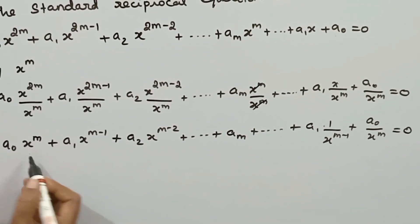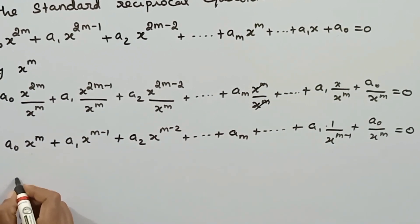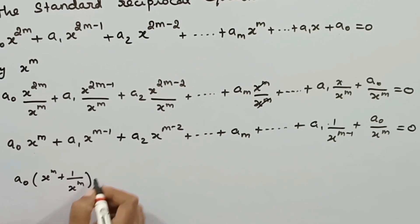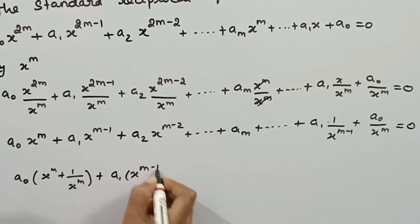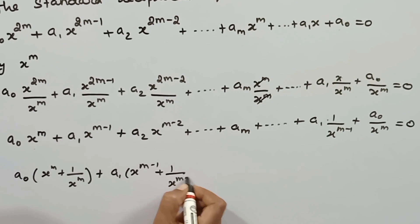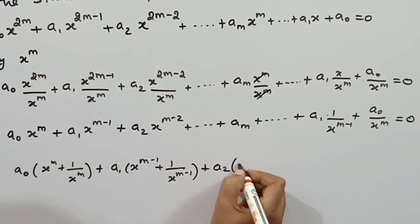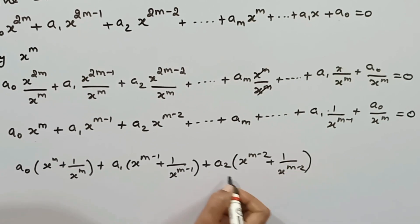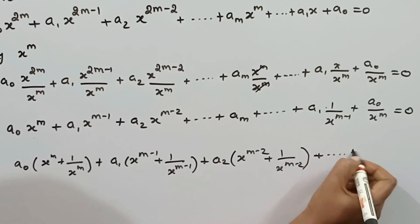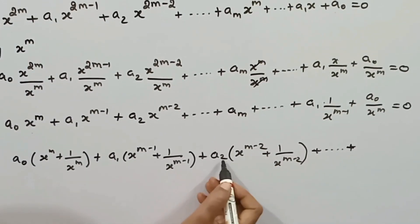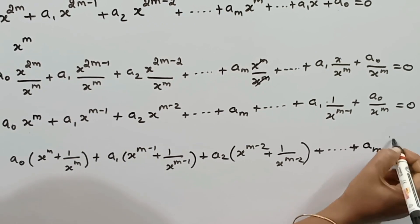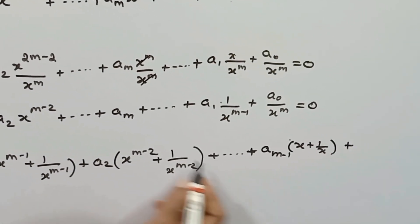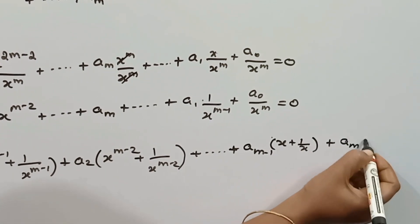The equation can be rearranged by grouping corresponding terms. We get: a0·(x^m + 1/x^m) + a1·(x^(m−1) + 1/x^(m−1)) + a2·(x^(m−2) + 1/x^(m−2)) + ... + a_(m−1)·(x + 1/x) + a_m = 0. This is our rearranged reciprocal equation with a constant term.